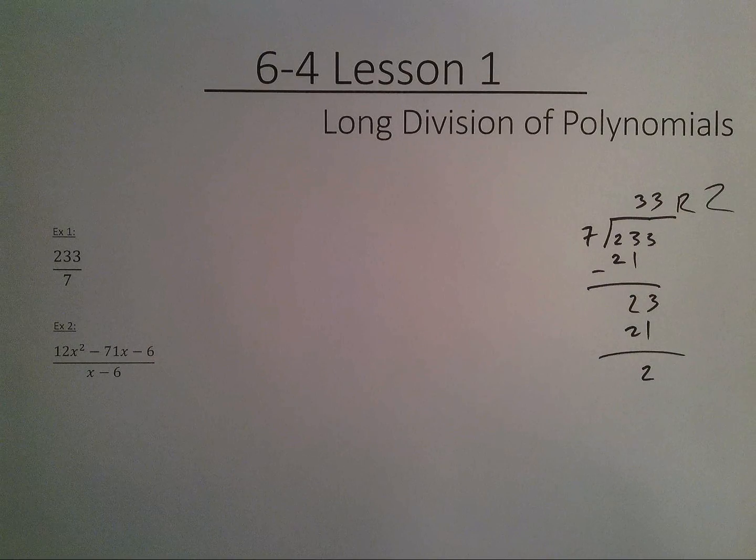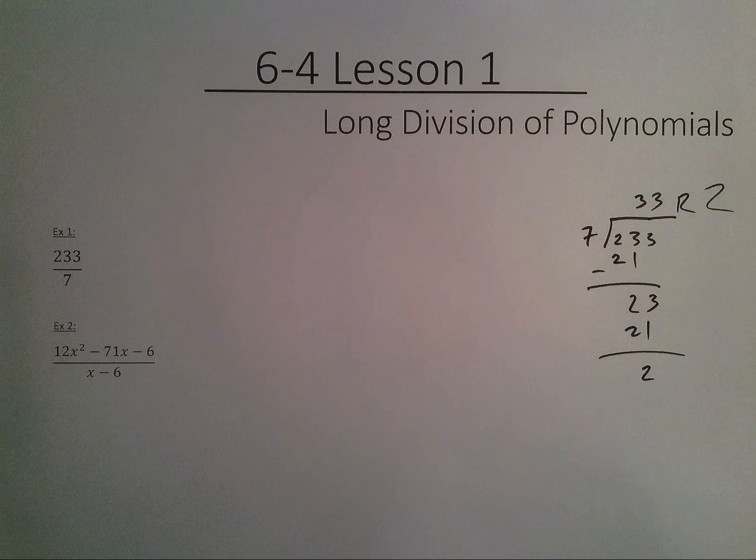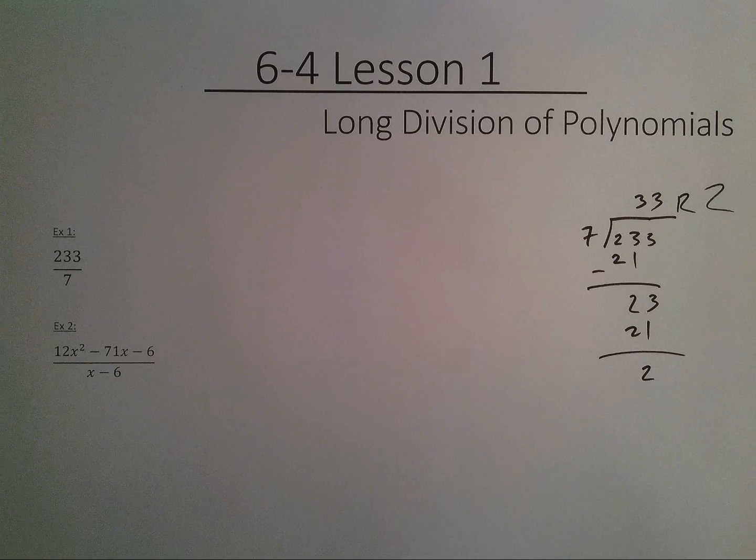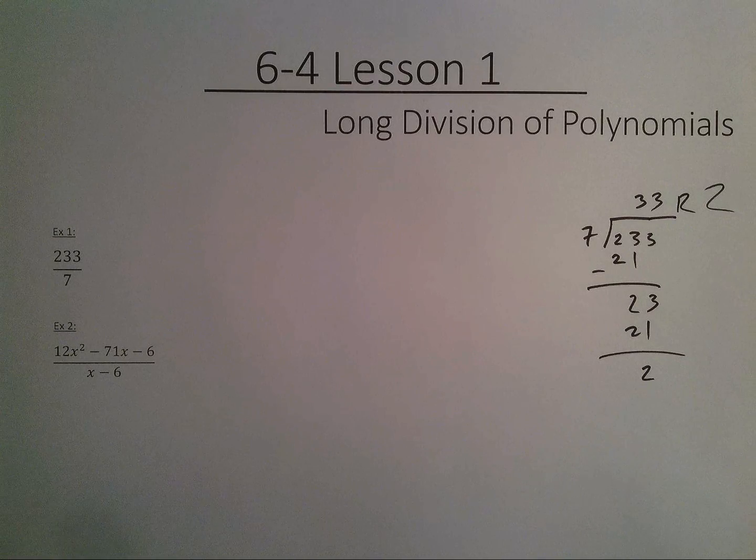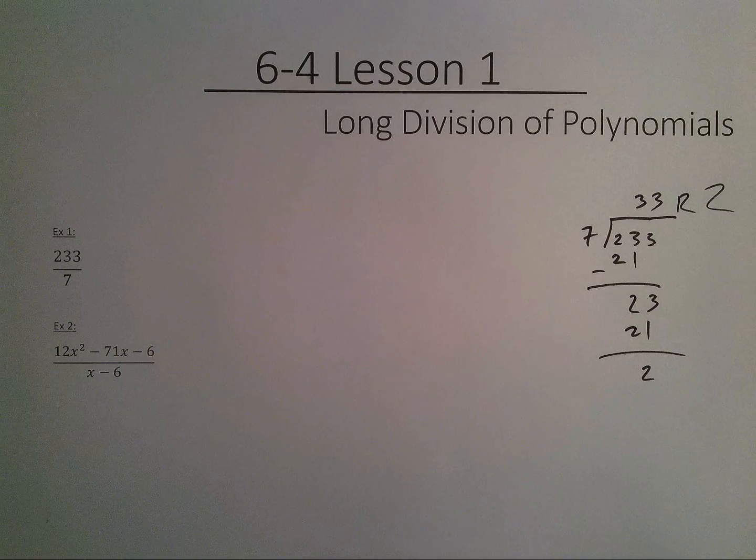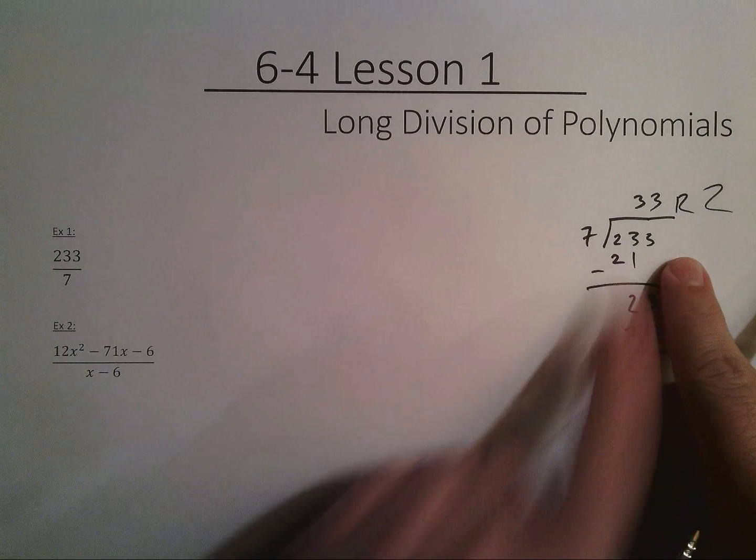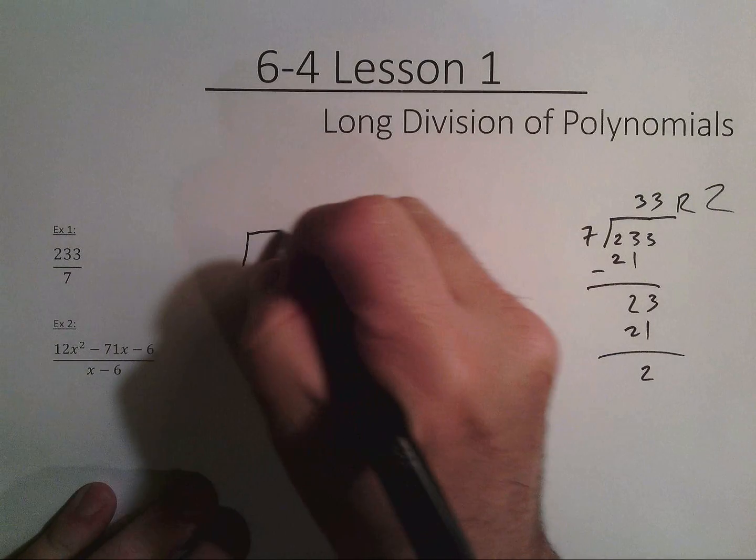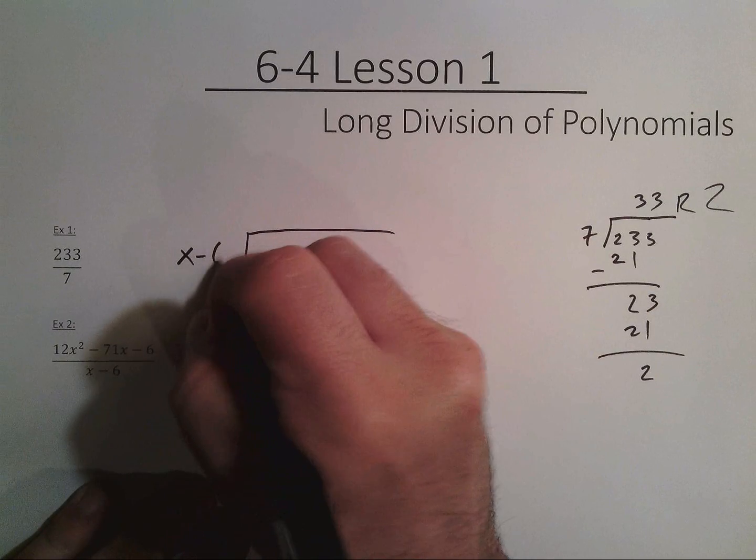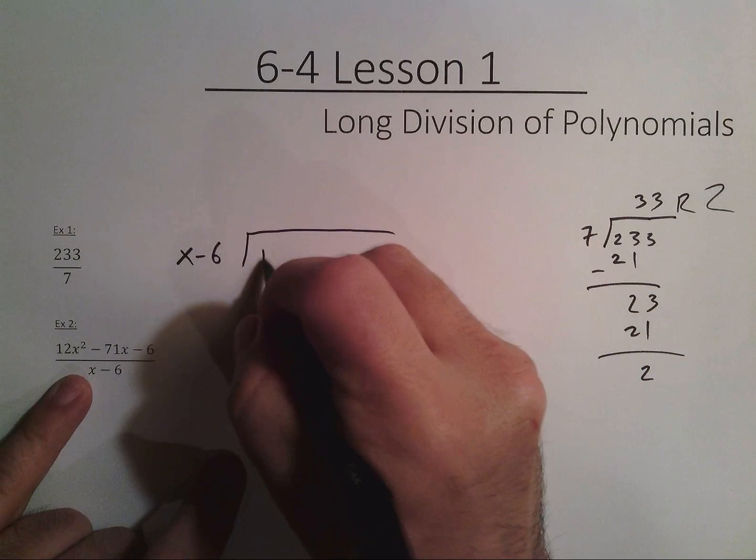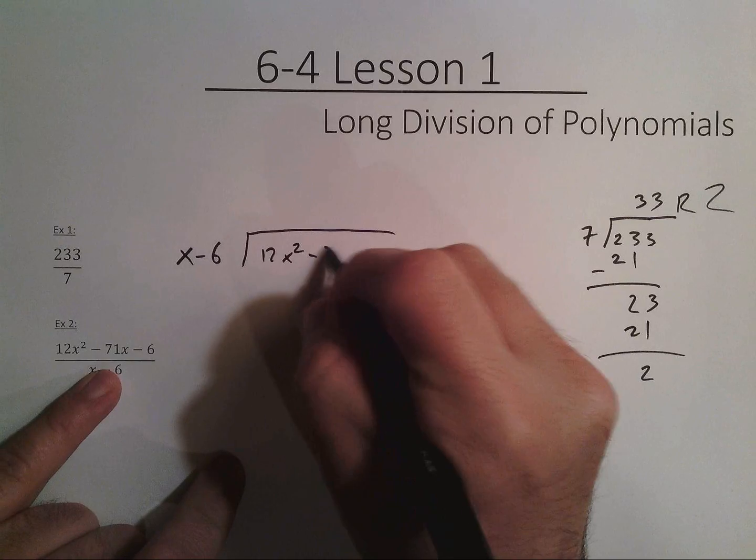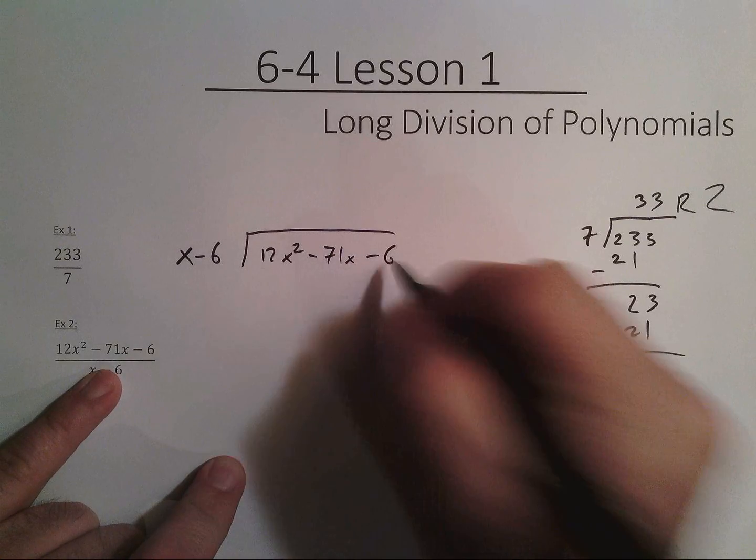All right, so now we're going to do the exact same thing, except we're going to do polynomials. So I have 12x squared minus 71x minus 6, all divided by x minus 6. I'm going to rewrite it in the same way. So I make my radical for the division. On the outside, I have the bottom, the x minus 6. And on the inside, I have the 12x squared minus 71x minus 6.